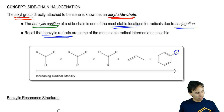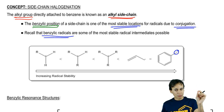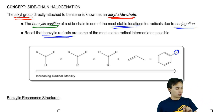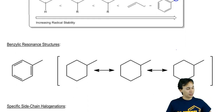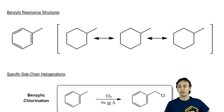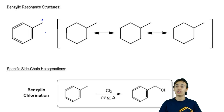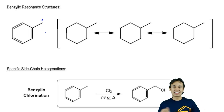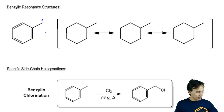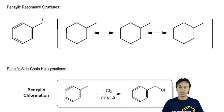A benzylic radical loves to form because when it does, it can resonate throughout the whole ring. Let's actually investigate that further — let's draw all the resonance structures of a benzylic radical. Let's say I form a radical through some kind of radical reaction. What's going to happen is that radical isn't just going to stay there on the primary carbon. It's going to resonate throughout that whole ring. Let's go ahead and draw this.